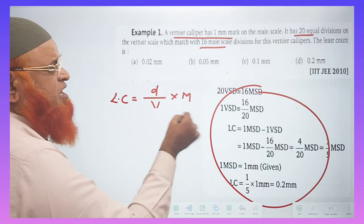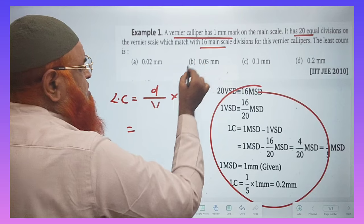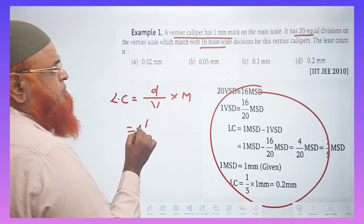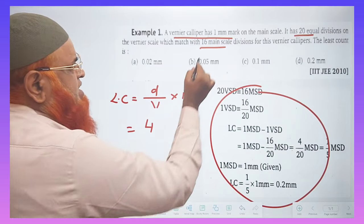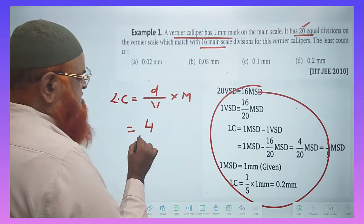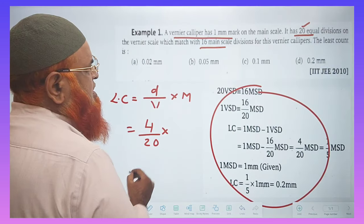D by V into M, main scale markings. So here this is called as a difference. What is the difference here? Now 20 minus 16 is taken as 4, and divided by vernier scale divisions. How many are there? There's 20 vernier scale divisions are there.